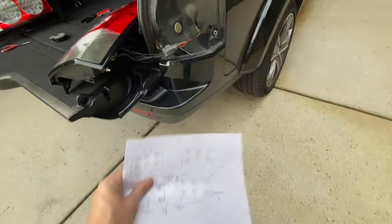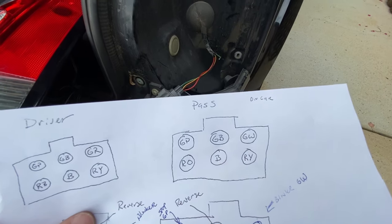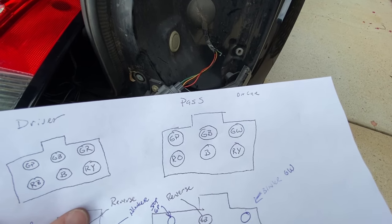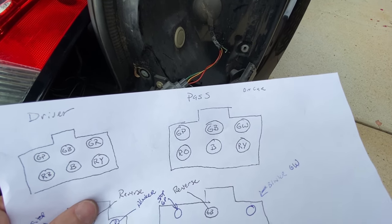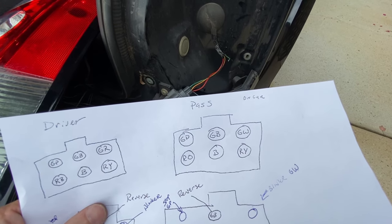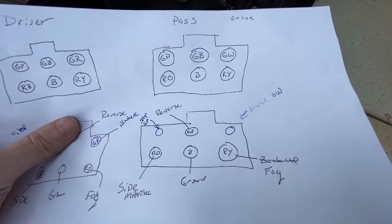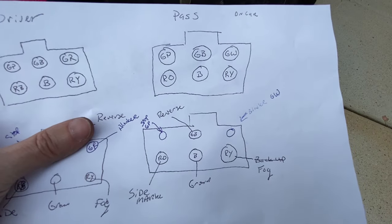Then RO which is red and orange, B is black, and RY is red and yellow. Down here is what it all means. Black is your ground. From top to bottom, GP is your stoplight, reverse is GB, your blinker or turn signal is GW, your side marker is RO.